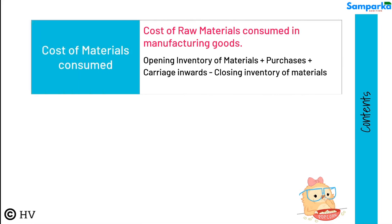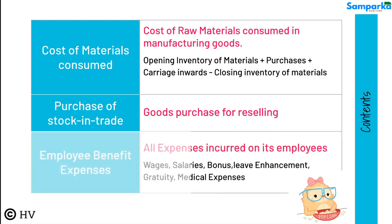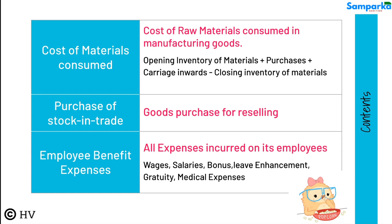Cost of Materials Consumed shall disclose the cost of raw materials consumed in manufacturing goods. Purchase of Stock-in-Trade shall show goods purchased for reselling. All expenses incurred on employees are disclosed under Employee Benefit Expenses.